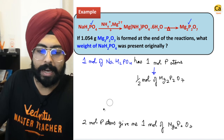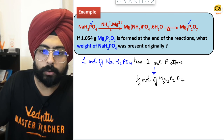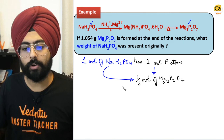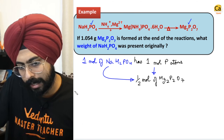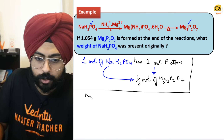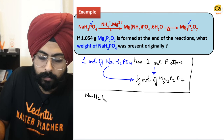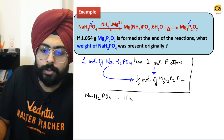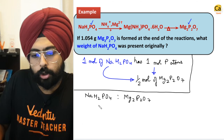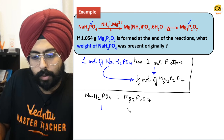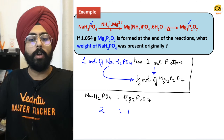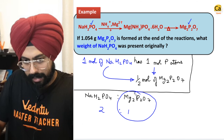We have the ratio: one mole of NaH2PO4 gives half a mole of Mg2P2O7. Or equivalently, the ratio of NaH2PO4 to Mg2P2O7 is 2 to 1. So 2 moles of NaH2PO4 will form 1 mole of Mg2P2O7 at the end.